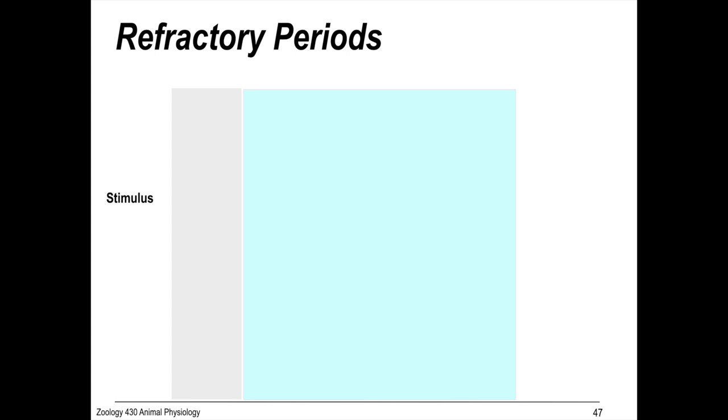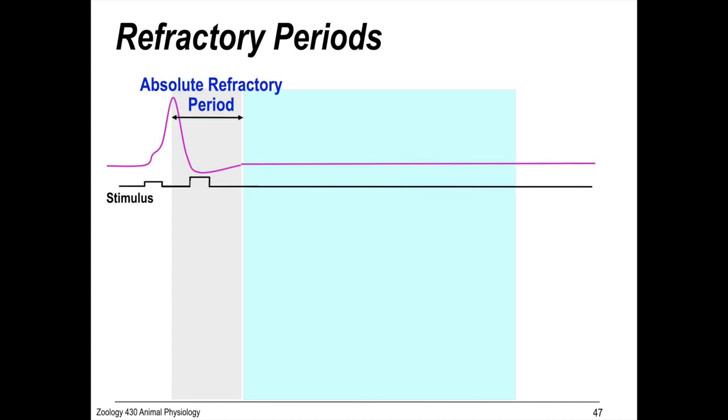So, obviously, neurons can't just fire continuously and repeatedly. When we have an action potential, there is something called an absolute refractory period, where no matter how much you stimulate it more, there's just no further action potential generated. It is beating a dead horse.